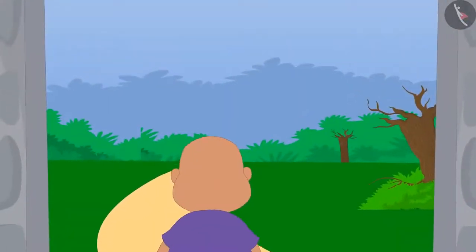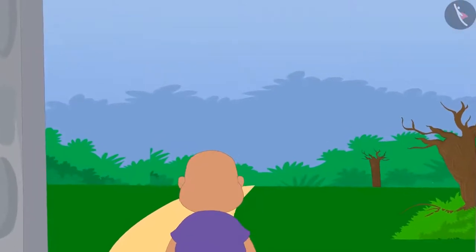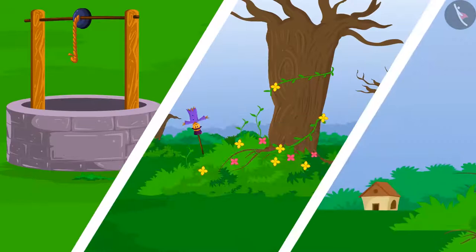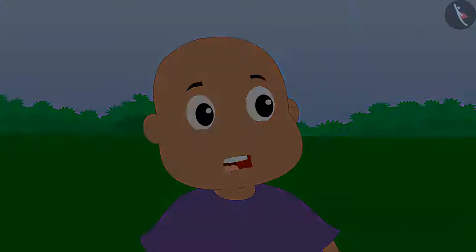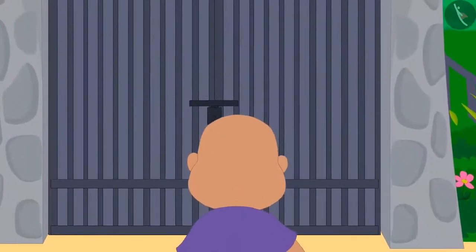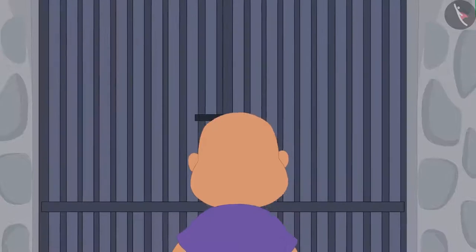Bablu was extremely naughty. He immediately went inside the village, but there was nobody in Ulta Pulta village. He got a little scared and wanted to come out of the same gate where he entered from, but it was closed.